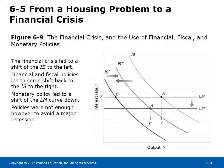Figure 6-9 shows the impact of the financial crisis and the use of financial, fiscal, and monetary policies to stabilize the economy. The financial crisis led to a shift of the IS curve to the left from IS to IS prime; the economy moved from point A to point B. Financial and fiscal policies led to some shift back of the IS curve to the right, from IS prime to IS double prime. Monetary policy led to a shift of the LM curve down from LM to LM prime; the economy moved from point B to point A prime. However, policies were not enough to avoid a major recession. The economy went from point A before the recession to point B as a result of the crisis, and expansionary fiscal and monetary policies along with financial measures moved the economy to point A prime, where output Y prime is smaller than output Y at point A before the crisis.